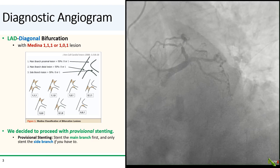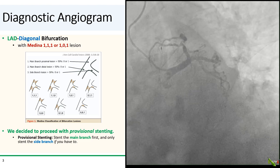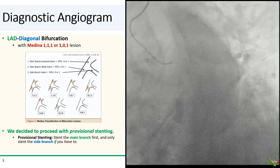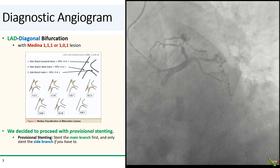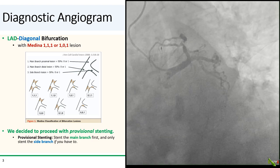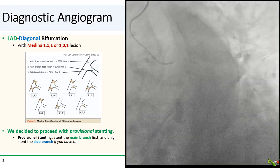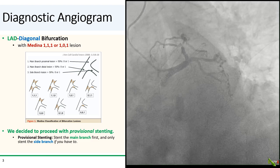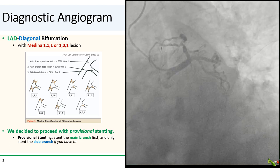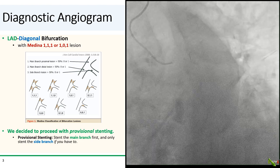Our initial approach was a provisional stenting strategy. In provisional stenting, the idea is to only stent the main branch — in this case the LAD — and balloon or stent the side branch only if you have to. Provisional stenting has been shown in multiple studies to have favorable results.